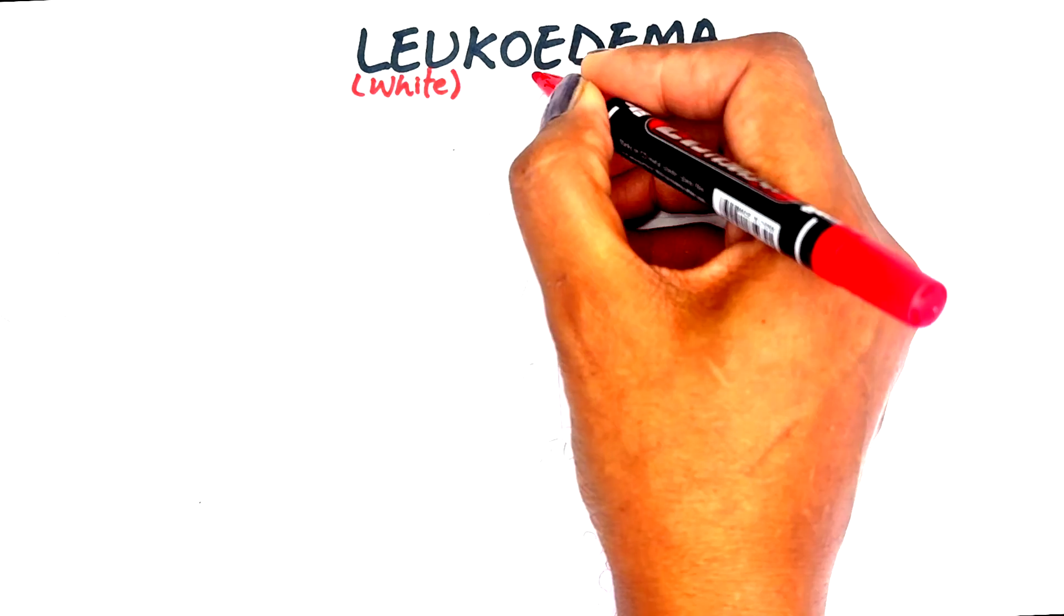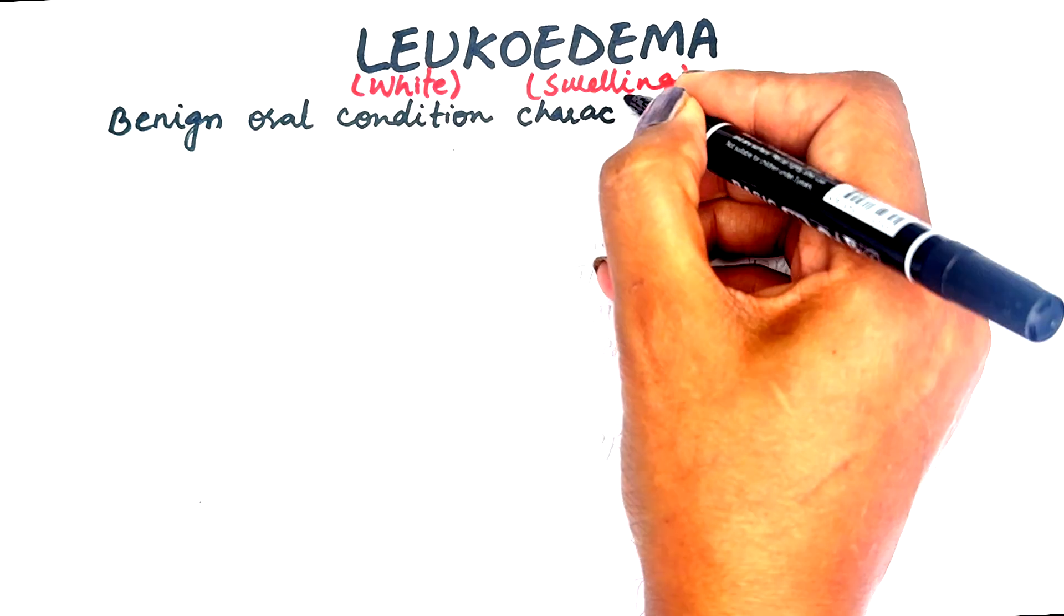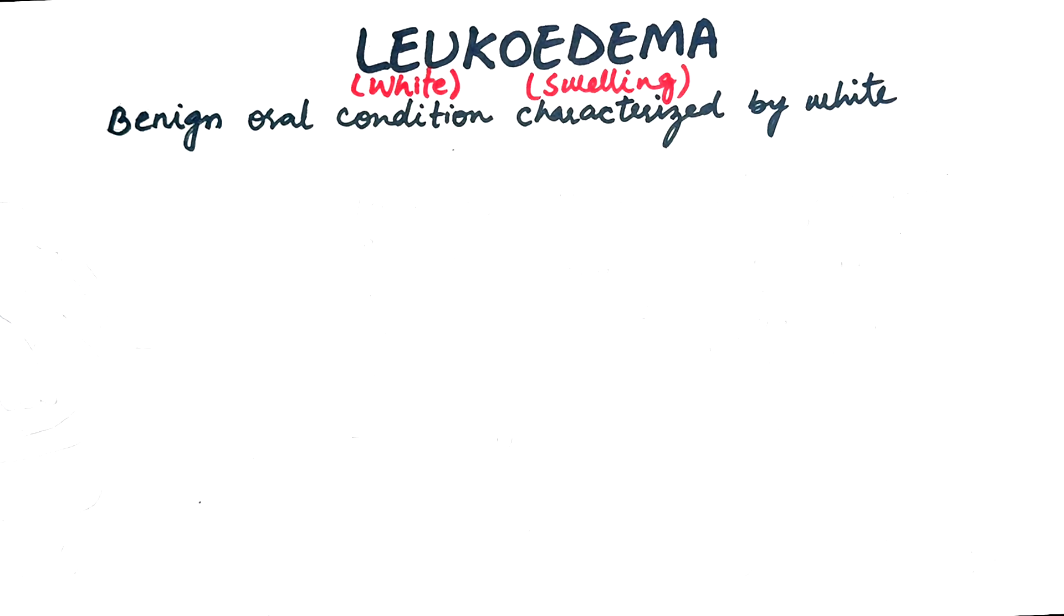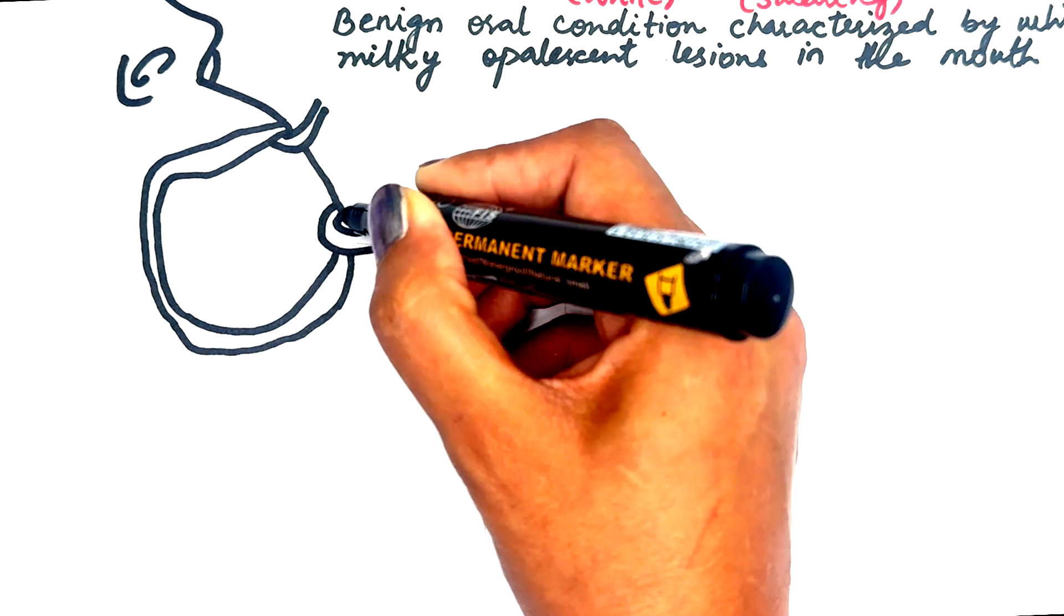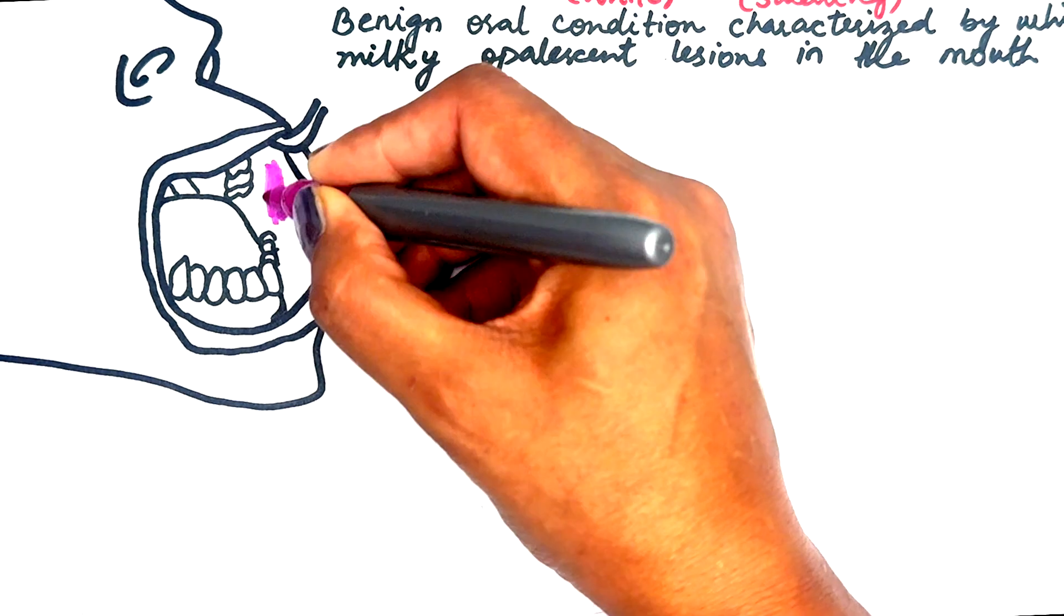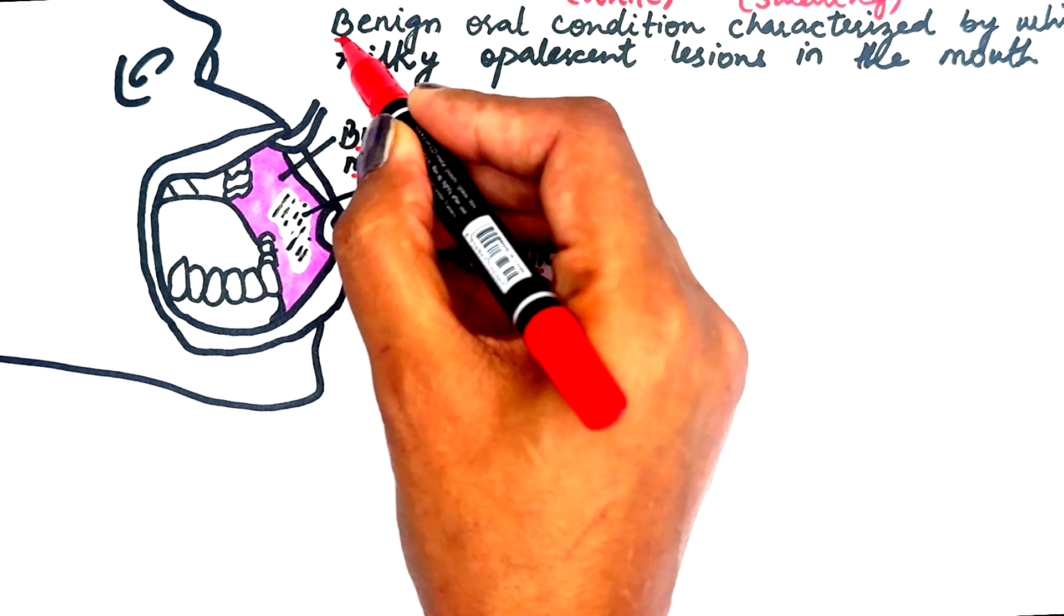The term leucoedema comes from leuco, which means white, and edema, meaning swelling, which refers to fluid accumulation in tissues. It is a benign oral condition characterized by gray-whitish, milky, opalescent lesions on the buccal mucosa. These lesions can appear as diffuse or patchy areas and are typically asymptomatic.